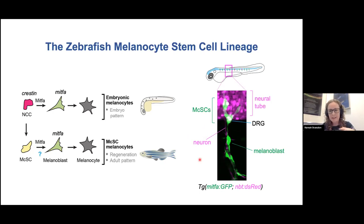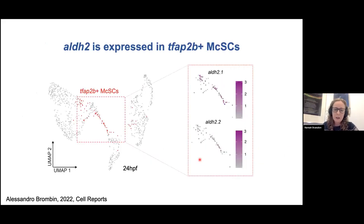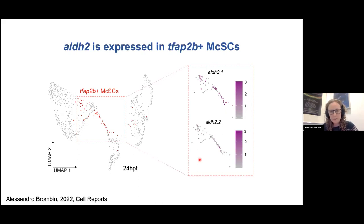This is quite a mysterious population and not much is known about how the transitions work in this reactivated lineage. The first hint that ALDH2 might be involved came from a dataset that my colleague Alessandro Brombin recently published in Cell Reports. He did single-cell RNA-seq at 24 HPF and found a population of melanocyte stem cells marked by TFAP2B. I found that ALDH2.1 and 2.2 were expressed in a subpopulation of these cells, so ALDH2 is definitely expressed in these stem cells.